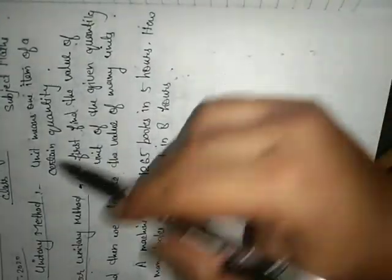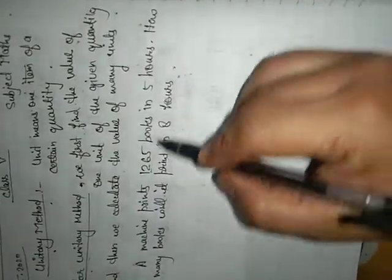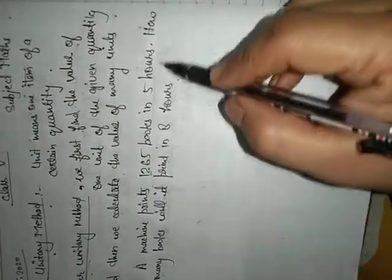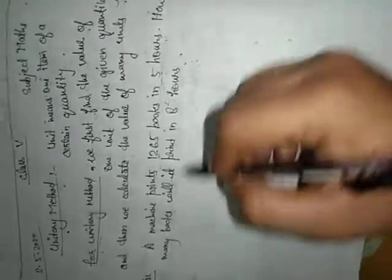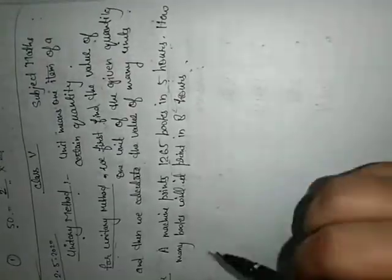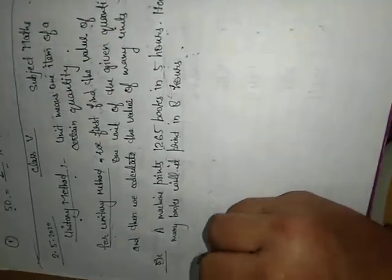Now first of all, the unitary method says that you will find one quantity. Here is 5 hours, but we don't know in one hour how many books the machine prints.